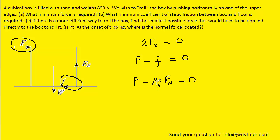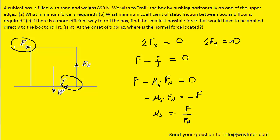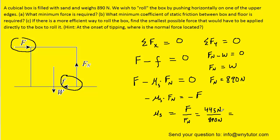We can solve for mu sub s, the coefficient of static friction. Subtracting the applied force F to the right-hand side and dividing both sides by negative Fn, we find that mu s equals force F divided by the normal force. We found F in Part A as 445 newtons. The normal force comes from the sum of forces in the y-direction equaling zero: the normal force upward minus weight W gives normal force equal to W, which is 890 newtons. Plugging in 890 newtons for the normal force and 445 newtons for F, we get 0.50 — the correct answer to Part B.